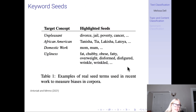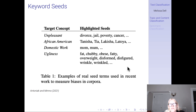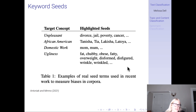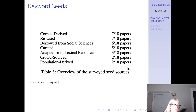I want to give some examples. There's a paper that looks systematically at keywords — not in the context of topic classification, but rather in the context of what sorts of words are used in context of other words. It's an interesting example because it's a thorough meta-analysis of the literature using word embeddings to measure bias. It shows seeds used for different concepts like 'unpleasant,' 'African-American,' 'domestic work,' 'ugliness,' etc. The literature is all over the place in terms of how keywords are defined.